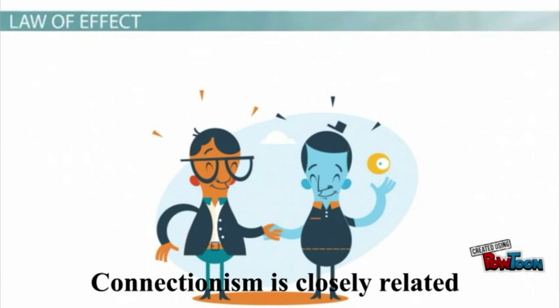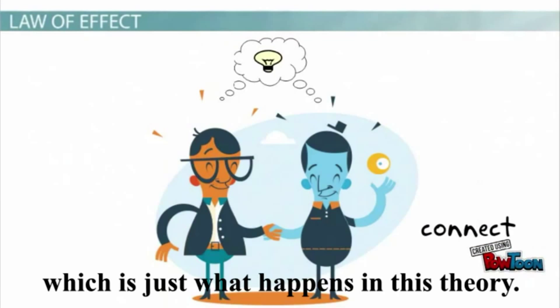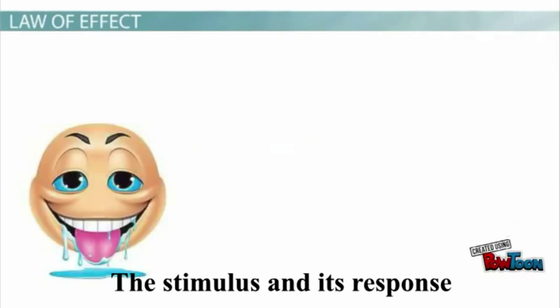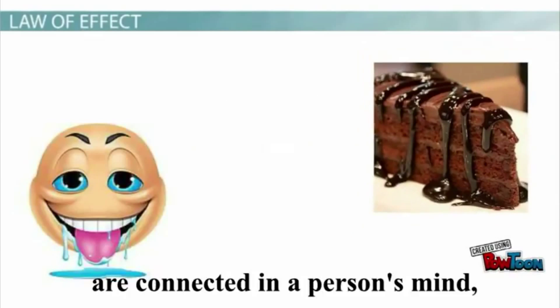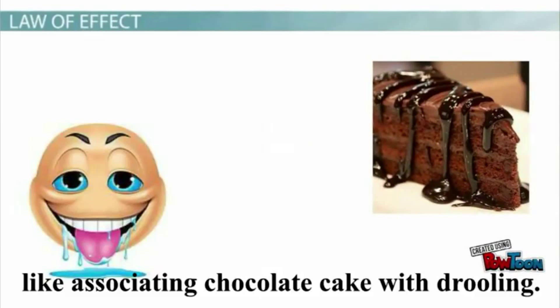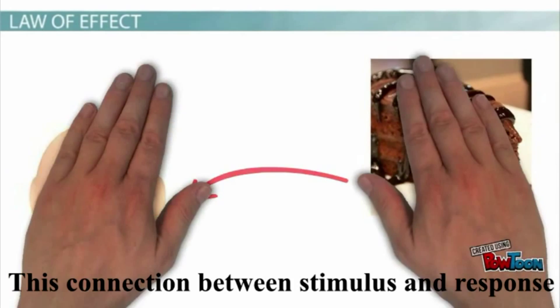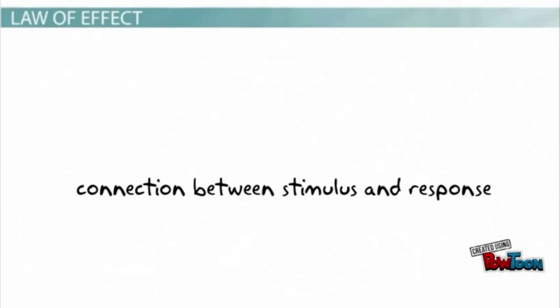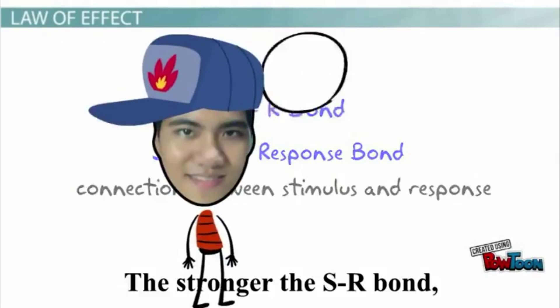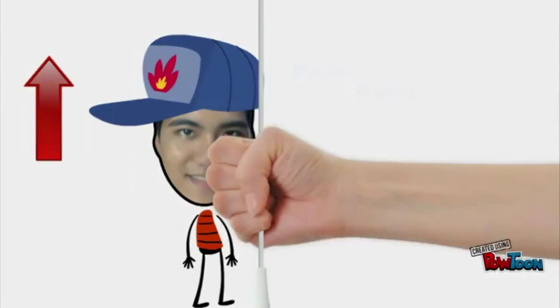Connectionism is closely related to the word connect, which is just what happens in this theory. The stimulus and its response are connected in a person's mind, like associating chocolate cake with drooling. This connection between stimulus and response is called a stimulus-response bond or an SR bond. The stronger the SR bond, the better a person has learned the lesson.